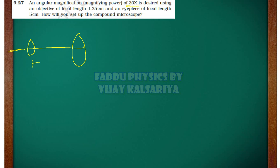We have magnification given by 30x. So what is the total magnification? M is equal to MO into ME. This is 30x given. MO into ME.